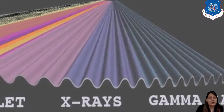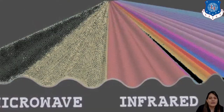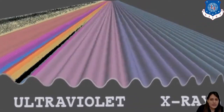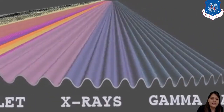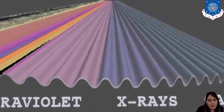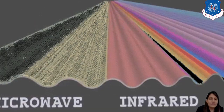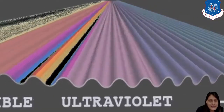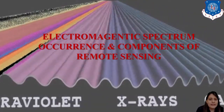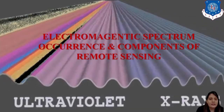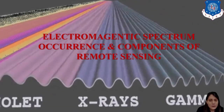Hello students, welcome to the session of remote sensing and GIS. We have discussed about electromagnetic radiation, which is very important. We all know that visible range, infrared range, UV rays, X-rays, and gamma rays have different wavelengths, and different wavelengths have different characteristics. Today we are going to discuss about the electromagnetic spectrum, occurrence, and components of remote sensing.